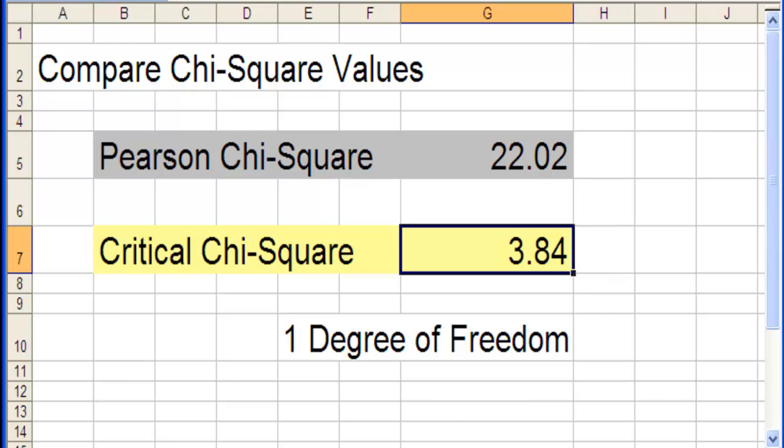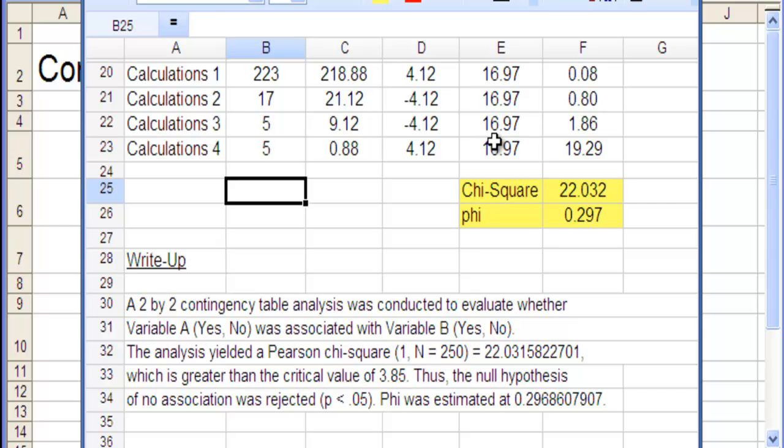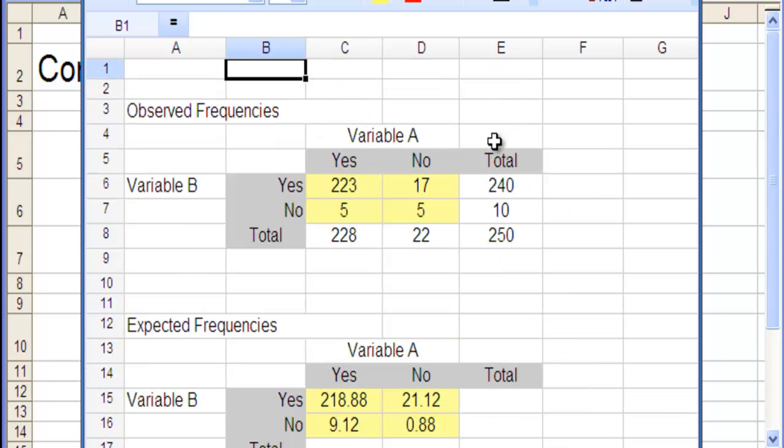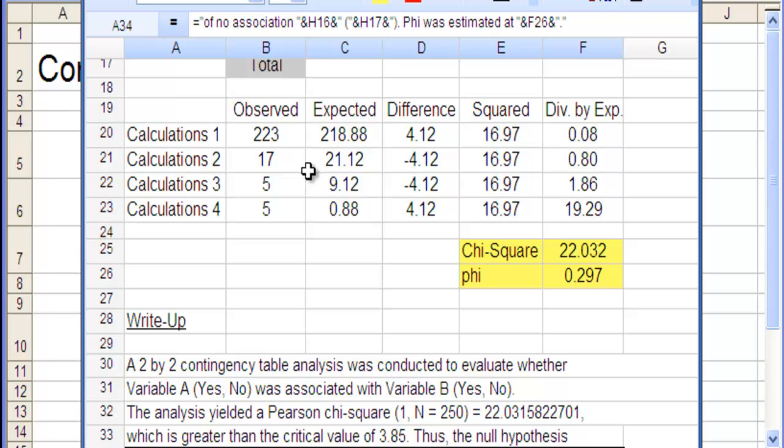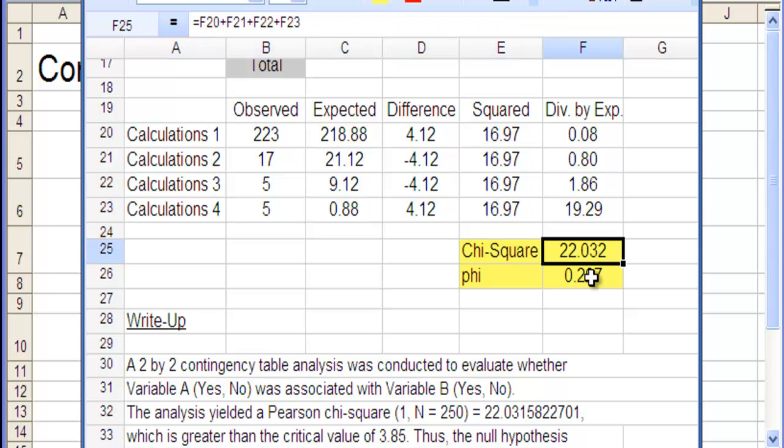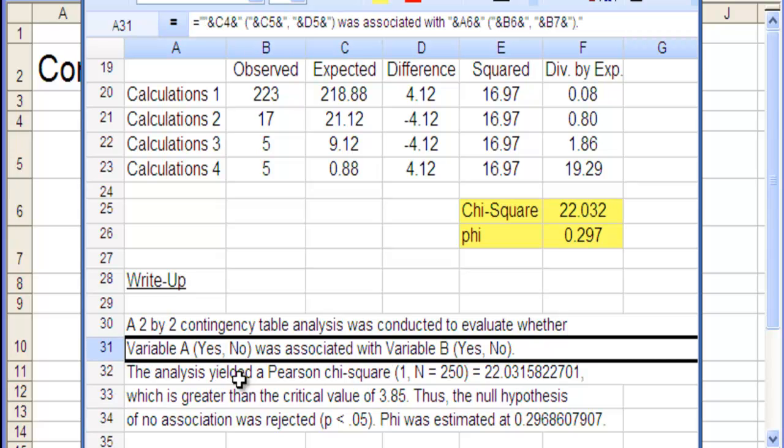Now just before I conclude, I'll point out that this spreadsheet that I created does this all interactively. You just have to type in your numbers here, and then it changes. It calculates all the expected cell frequencies, and then the calculations, the difference between the expected and the observed, and then it calculates the chi-square value, calculates phi, which I didn't talk about, and then it writes up a little report. It does a little write-up for you. All right, I hope you found this useful, and I'll catch you next time.